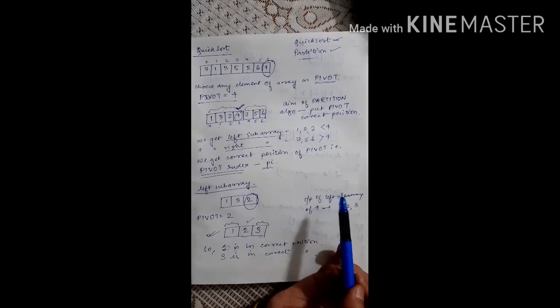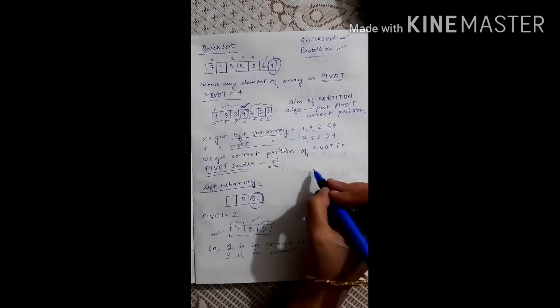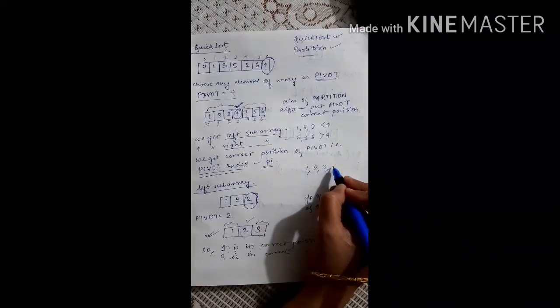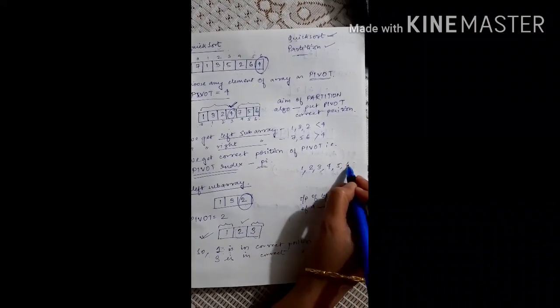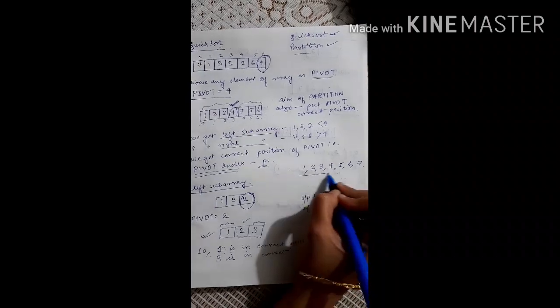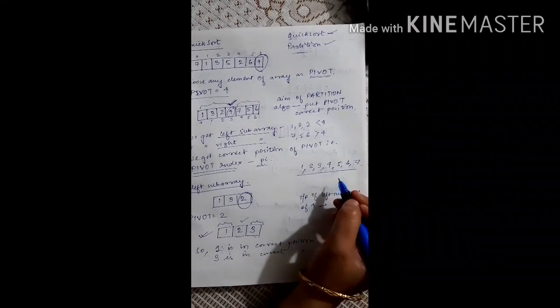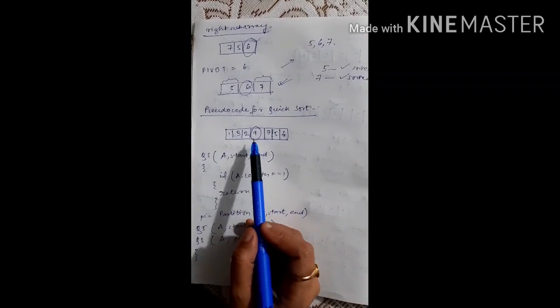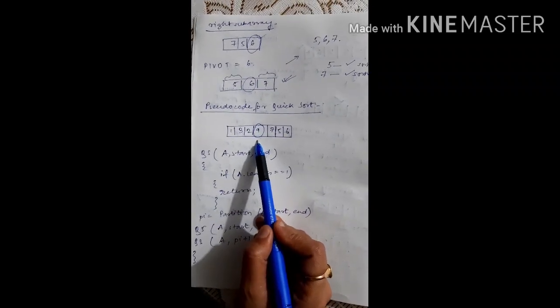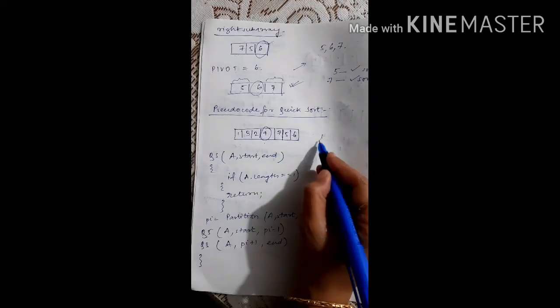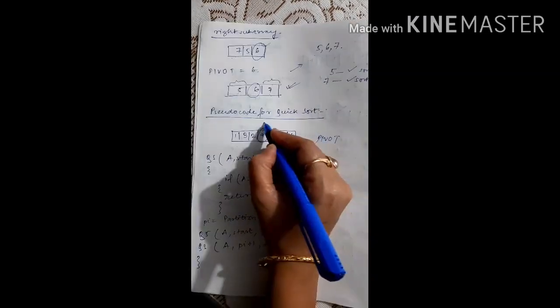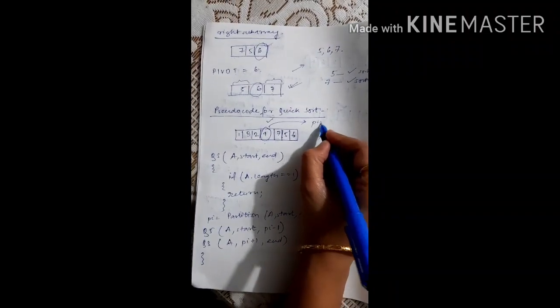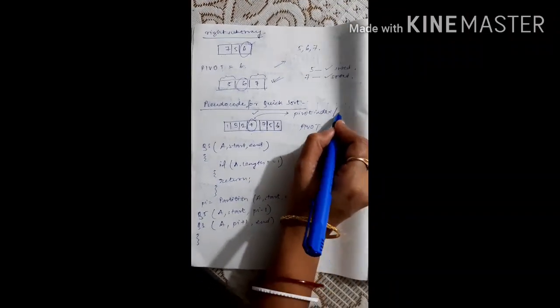From the right sub-array we get sorted order 5, 6, 7 and from the left sub-array we have sorted order 1, 2, 3. Combining these: 1, 2, 3 then 4 then 5, 6, 7. So at the end of applying this partition algorithm three times we have one sorted array: 1, 2, 3, 4, 5, 6, 7. We are representing this pivot element's location as the pivot index or PI.